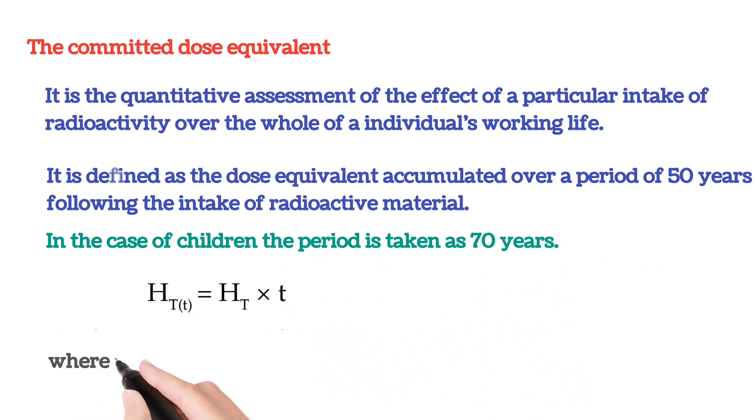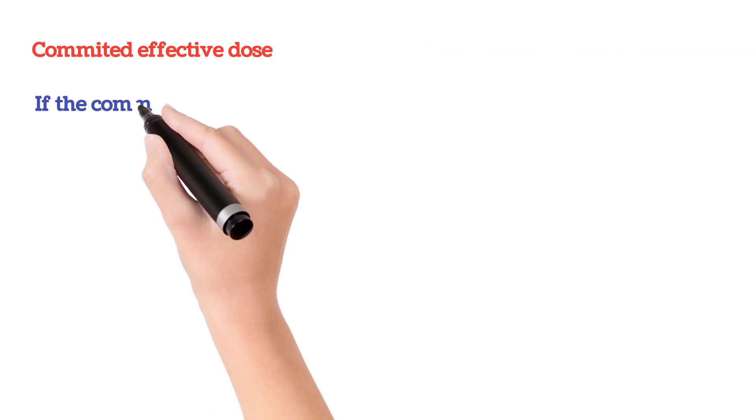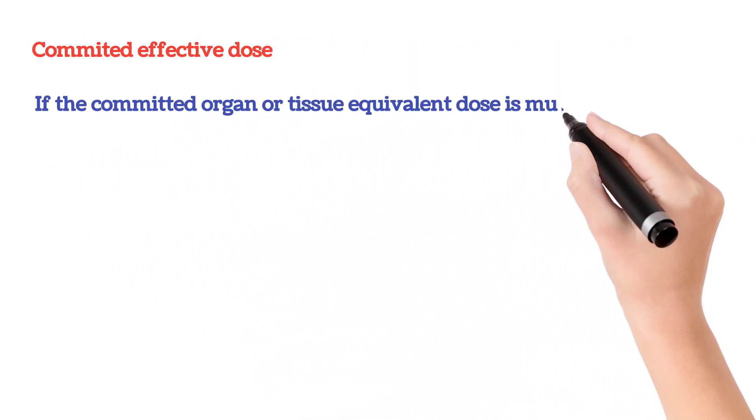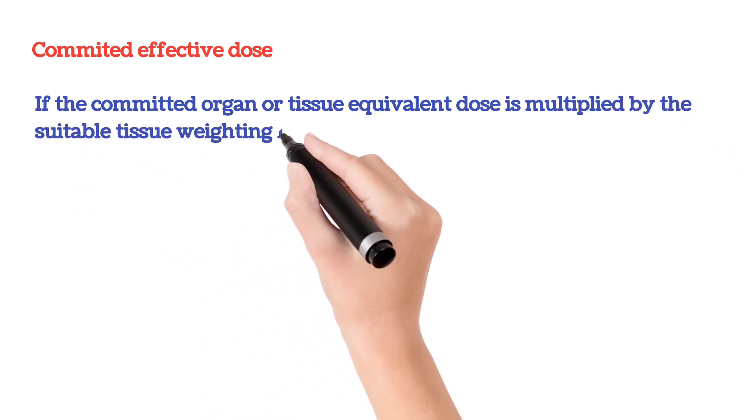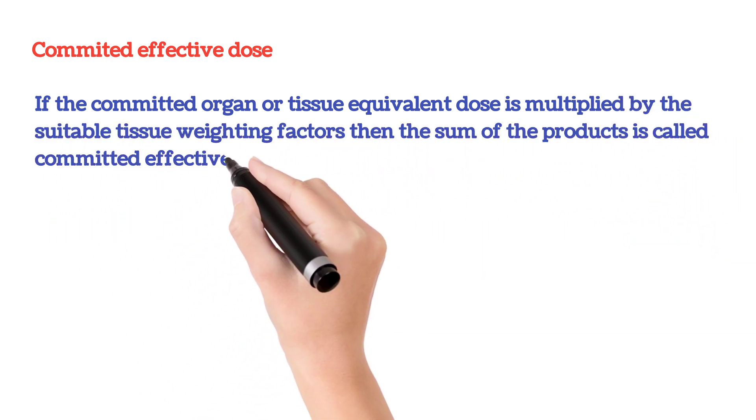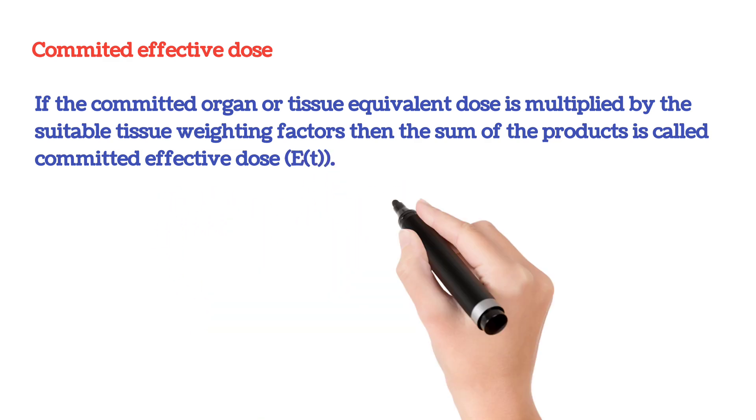In this formula, T is the period of time in years. If the committed equivalent dose is multiplied by the suitable tissue-weighing factors, then the sum of the products is called committed effective dose. In this equation, W_T is the tissue-weighing factor.